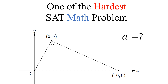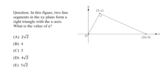Hi everyone. In today's video we are going to solve this SAT math problem. The question is: in this figure, two line segments in the XY plane form a right angle triangle with the X axis. What is the value of A? We need to find this A.